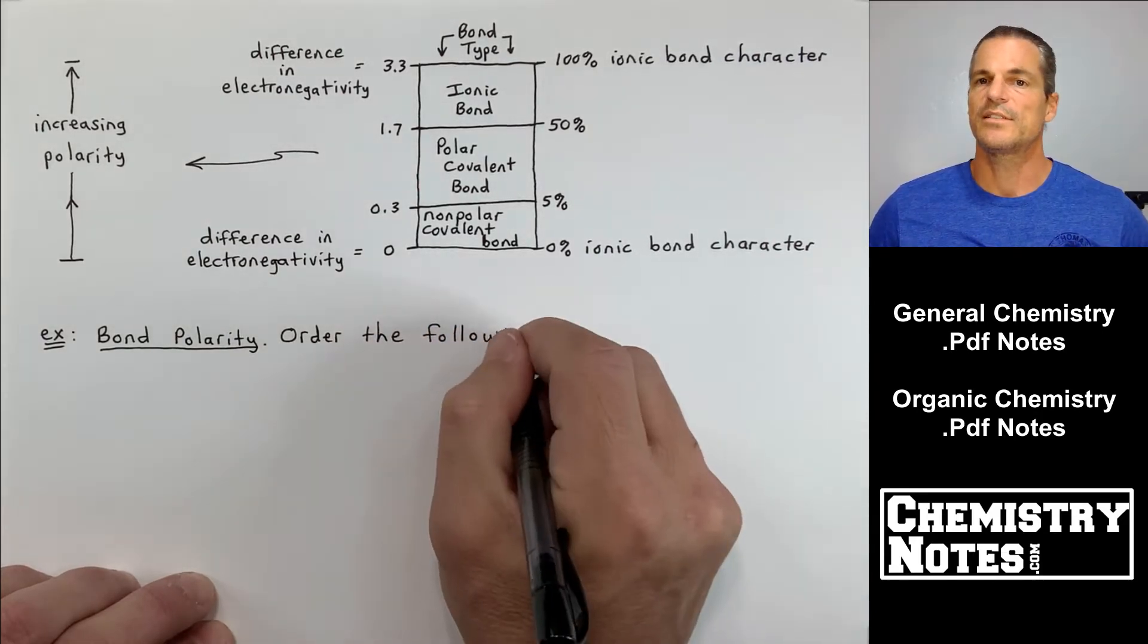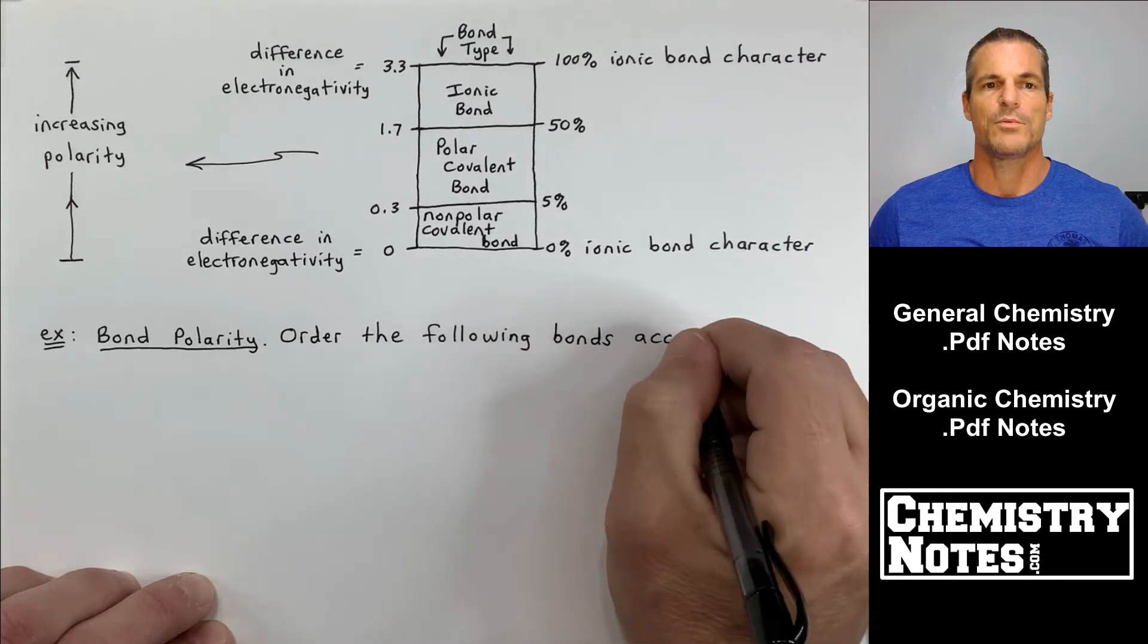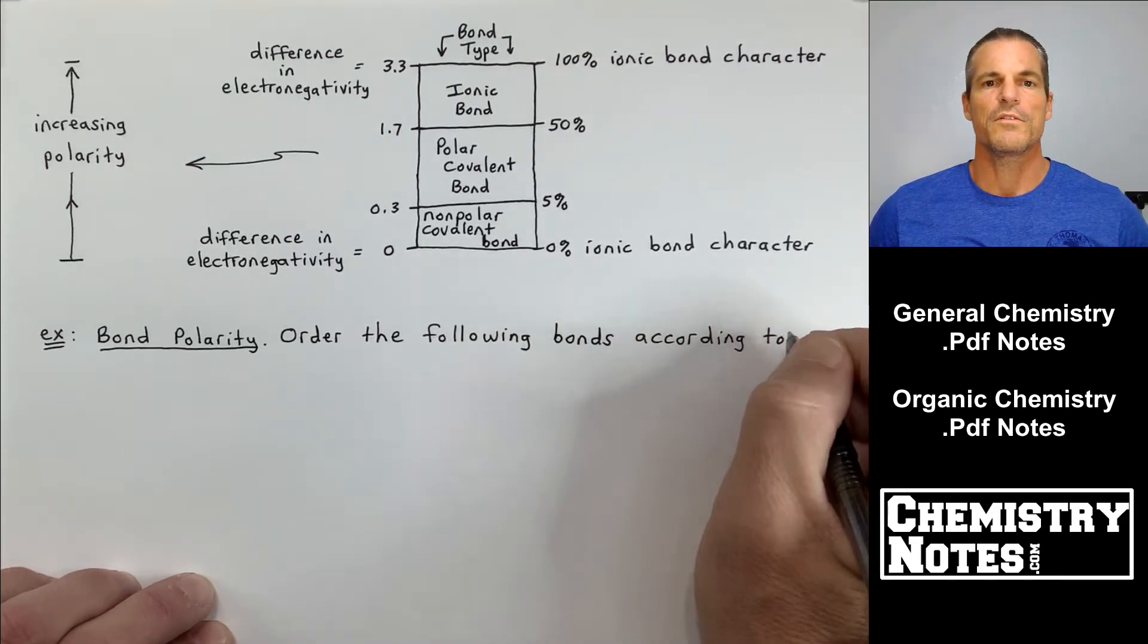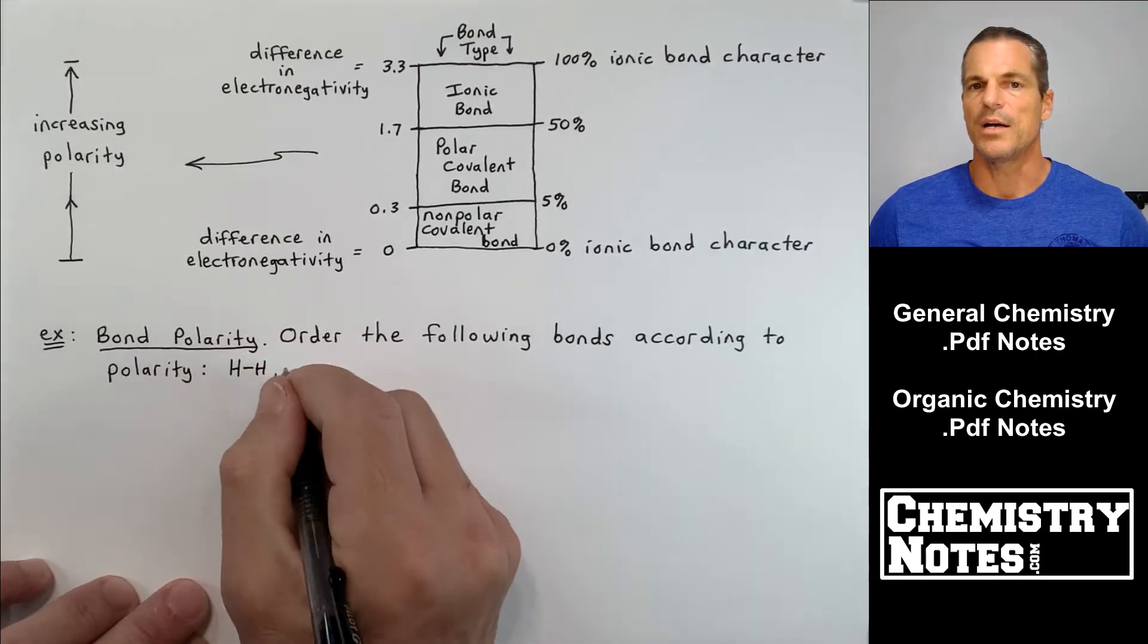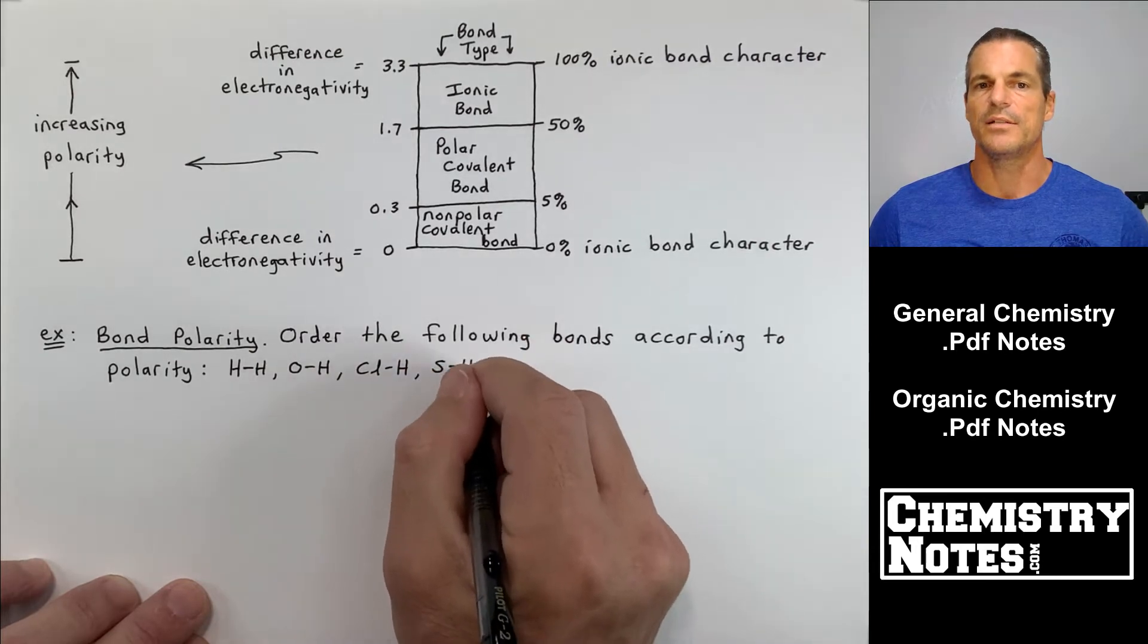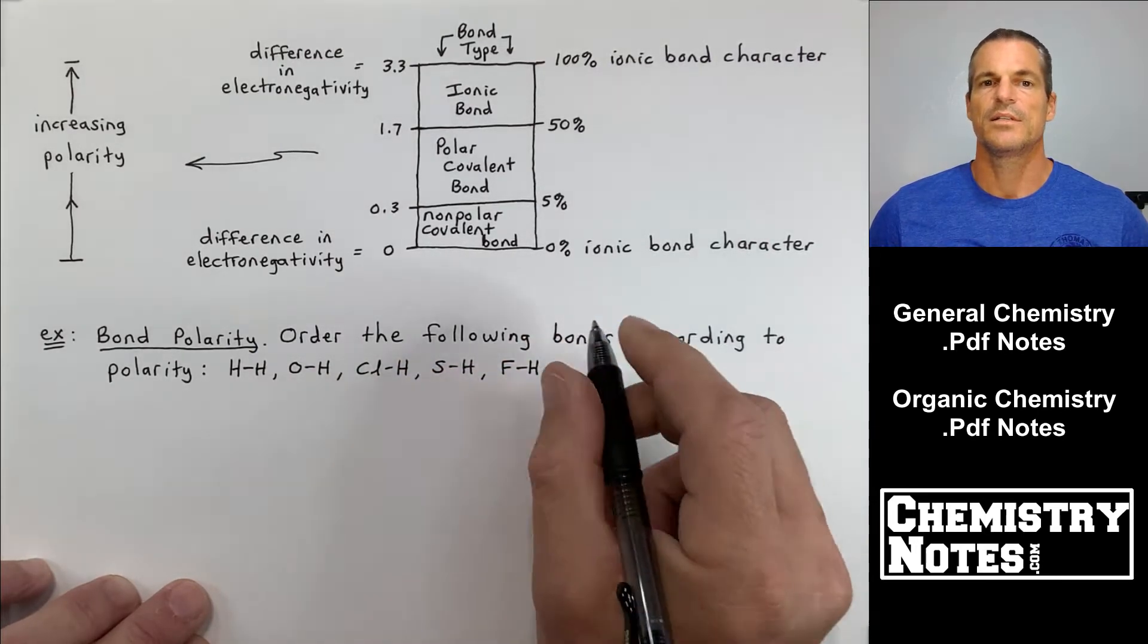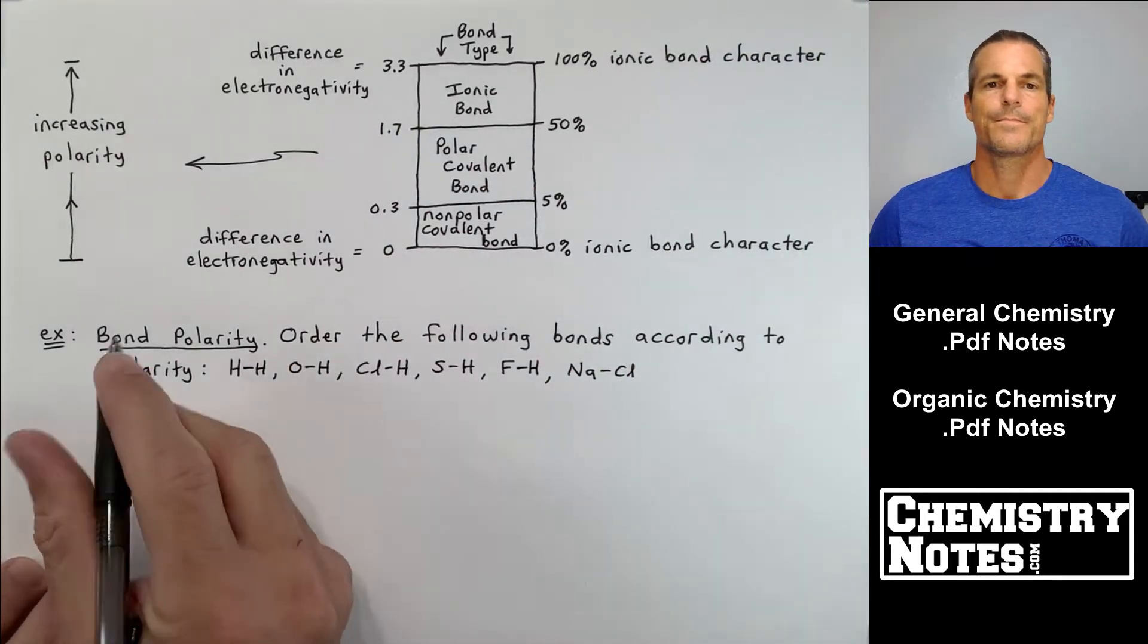So let's do an example with this chart in front of us and see how we do. So example, bond polarity. Order the following bonds according to polarity. We have an H-H bond, an O-H bond, a Cl-H bond, an S-H bond, an F-H bond, and an Na-Cl bond.